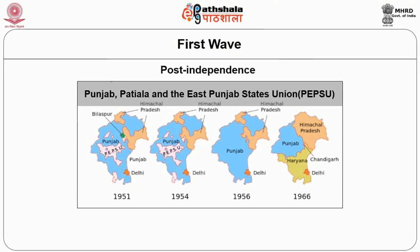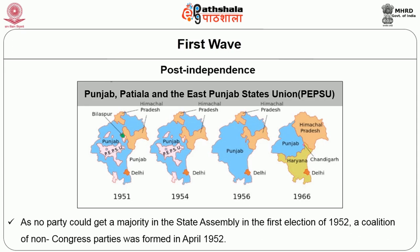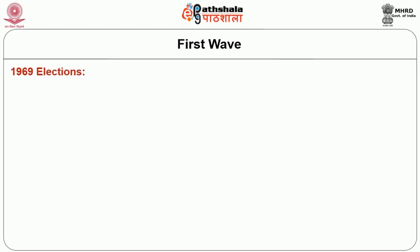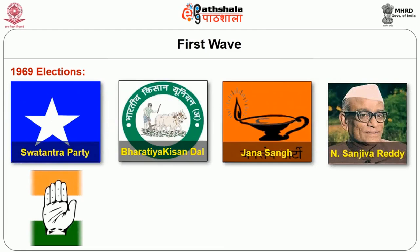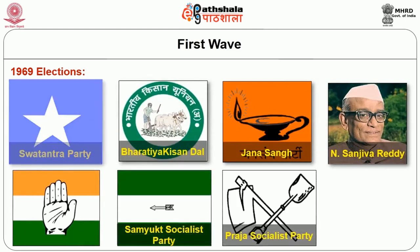After independence, the first coalitional experiment can be traced to PEPSU — a state formed through the merger of erstwhile princely states of Punjab into a separate state. PEPSU was formed in 1948 and remained in existence till 1956. The first coalition, a non-Congress party government, was formed in PEPSU in 1952 — making it the first example of a coalition government in independent India.